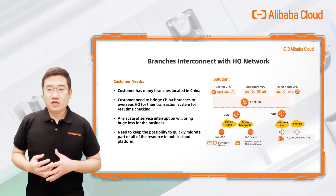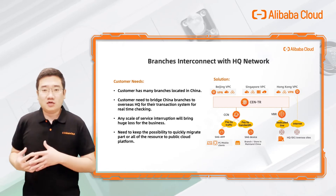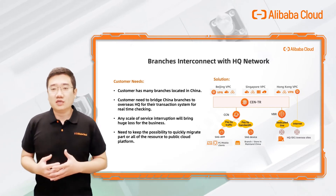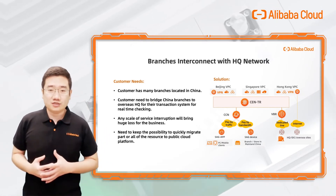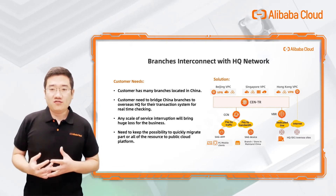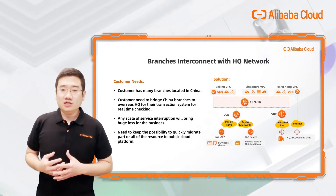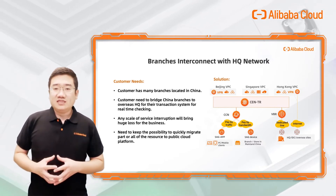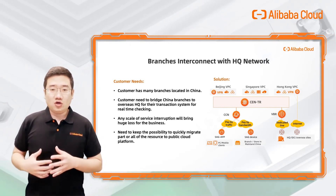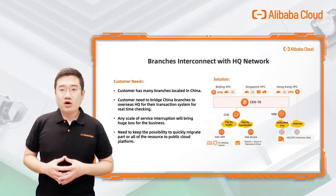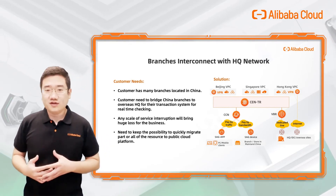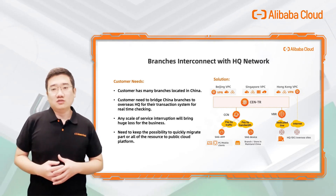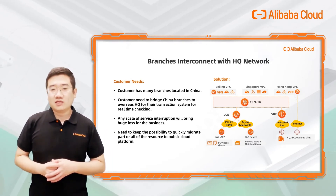Customers need to keep the ability to quickly migrate part or all of the resources to the public cloud platform. Our solution uses CEN to provide private network interconnection capabilities on and off the cloud. You can access a hybrid cloud network in all scenarios through SAG, Express Connect, and the VPN Gateway. The SAG app can be installed on employees' laptops or cell phones easily, and SAG hardware can be deployed in branch offices with fast deployment in minutes.